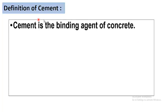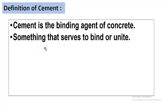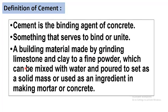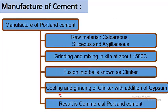First of all, the definition of cement: cement is the binding agent of concrete — something that serves to bind or unite. It is a building material made by grinding limestone and clay to a fine powder, which can be mixed with water and poured to set as a solid mass, or used as an ingredient in making mortar or concrete.